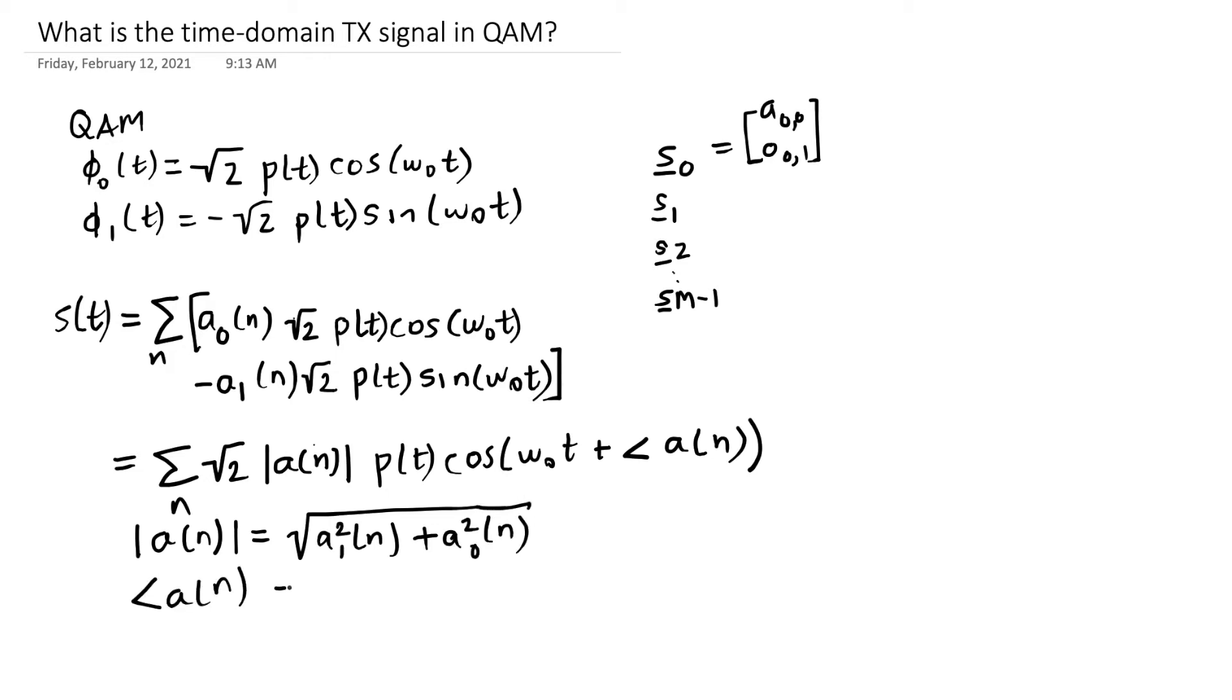And the phase angle is as if An was a complex number, that An magnitude would be the square root of A1 squared plus A0 squared, and the angle would be the inverse tangent of A1 divided by A0. This form shows that S of T has a magnitude and an angle.